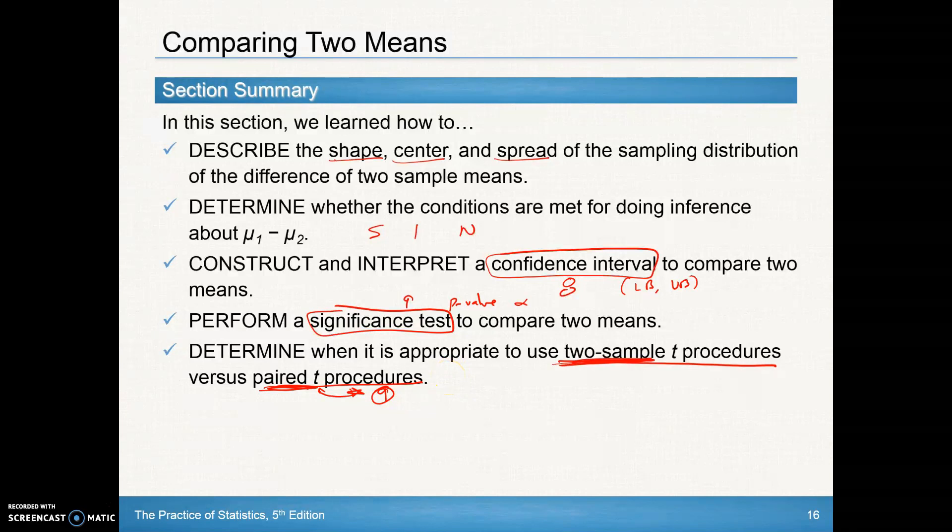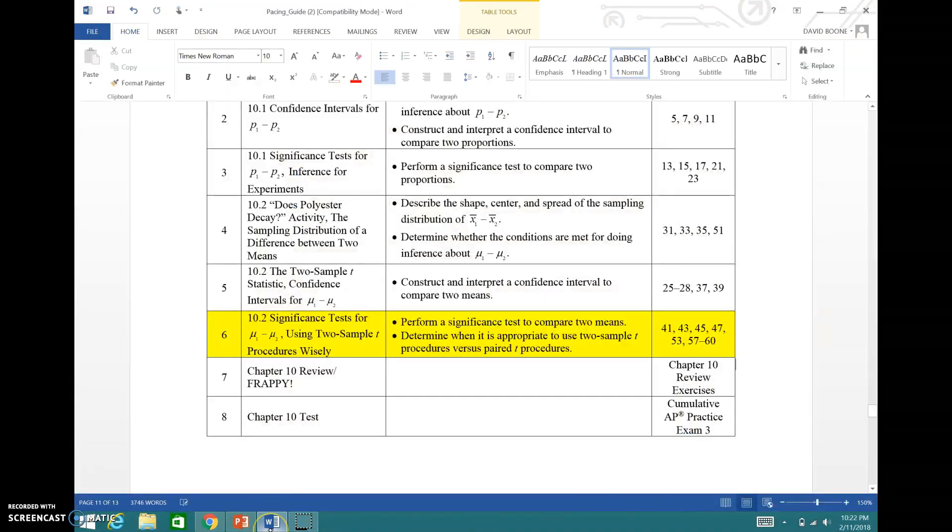Chapter 10, we are done. At this point, you should be able to do the following problems: from day six, you should be able to perform a significance test to compare two means and determine when it's appropriate to use the two-sample t procedures versus paired t procedures, and then do these problems right here. Good luck, and we'll see you in chapter 11.